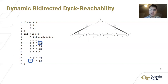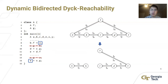The analysis shows that the two variables can be aliases to each other. However, we want to keep the analysis results up to date with code changes. Suppose we delete these two lines of code in the program — the program graph will be updated correspondingly. The analysis needs the updated result for Bidirected Dyck-Reachability. In fact, the two variables are no longer aliases to each other because there exists no Dyck path between node A and node E in the updated graph.